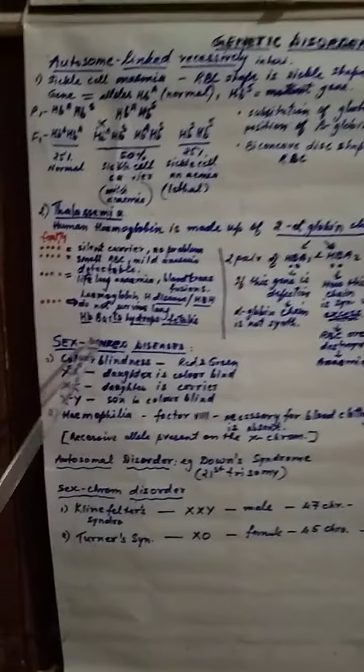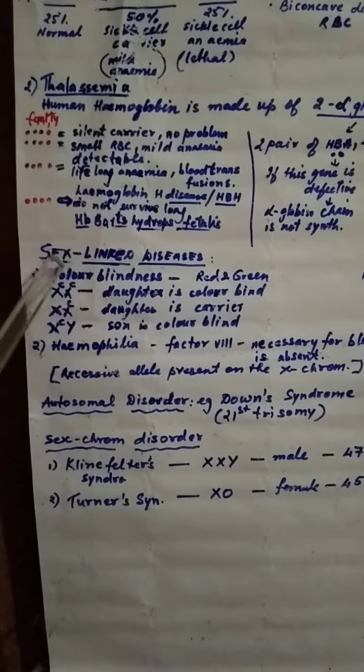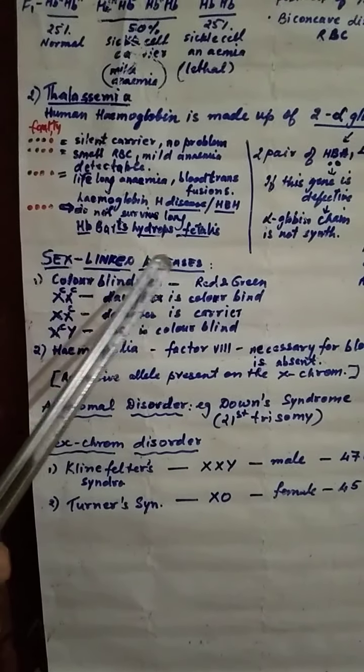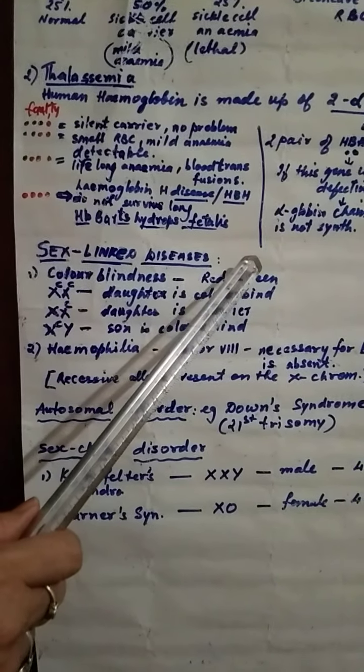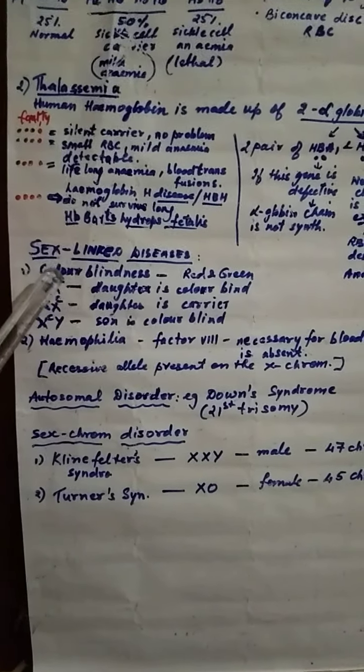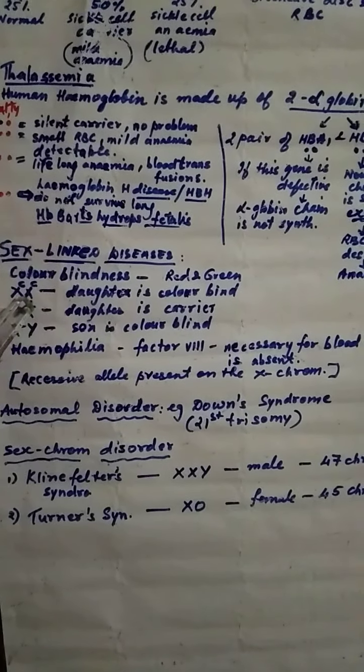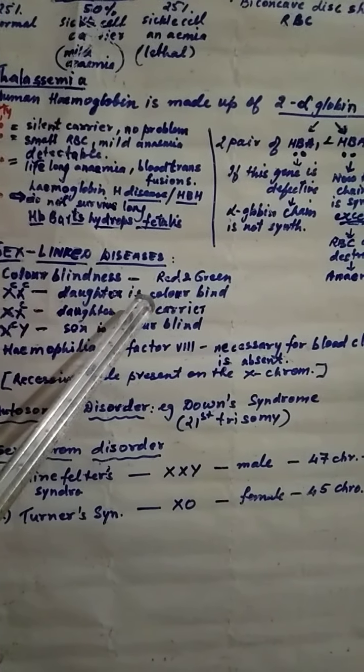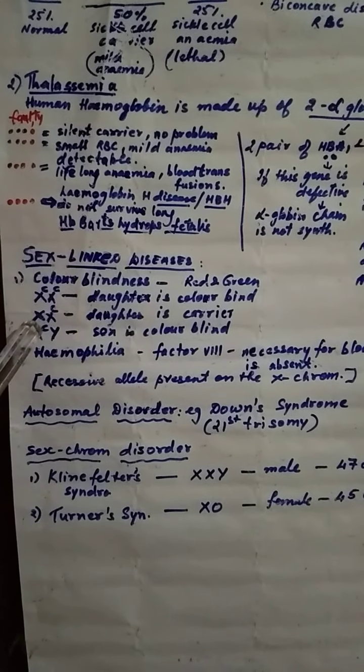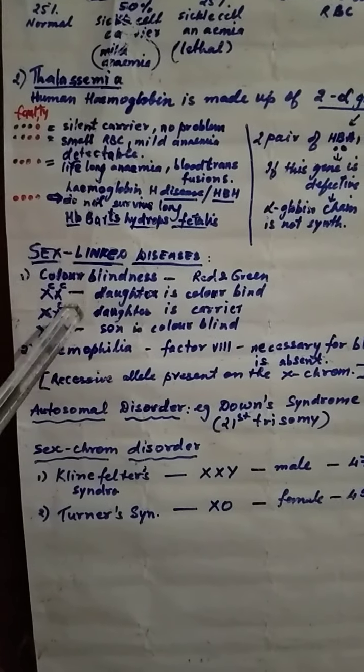Next is sex linked disease, that is the disease present on X or Y chromosome. We have to study color blindness and hemophilia here. Now what is color blindness? You know the person cannot detect red and green color if they are kept together. When XX are having the color blind gene, the daughter is color blind. If one X is only having the color blind gene, the daughters are carrier and they are normal. If son is color blind, so this you can explain with the help of Punnett square.